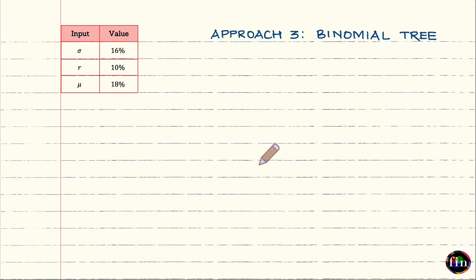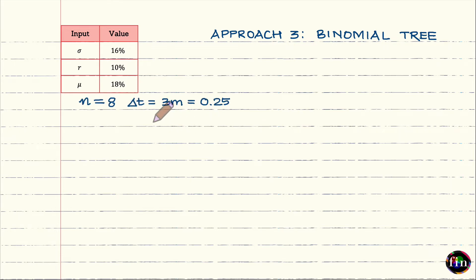In the limiting case where the number of time steps approaches infinity, each time step shrinks to zero, and the distribution implied by the binomial tree converges to the log-normal distribution assumed by Black-Scholes. To keep things simple, we will work with eight time steps. With a horizon T of two years divided into eight equal steps, each time step delta-T is three months, or 0.25 years.